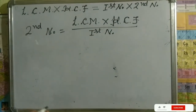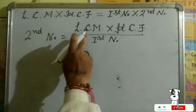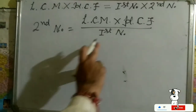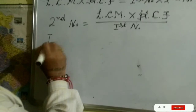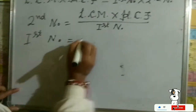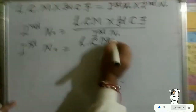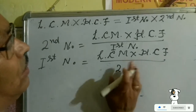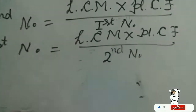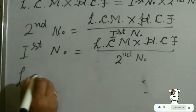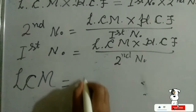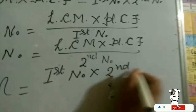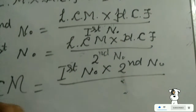If you want to get the second number, multiply LCM and GCF and divide by the first number. If you want to get the first number, you will write: First Number = (LCM × GCF) ÷ Second Number. If you want to get LCM, multiply the first number and second number, then divide by GCF.